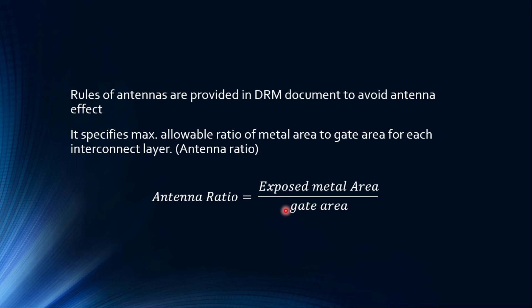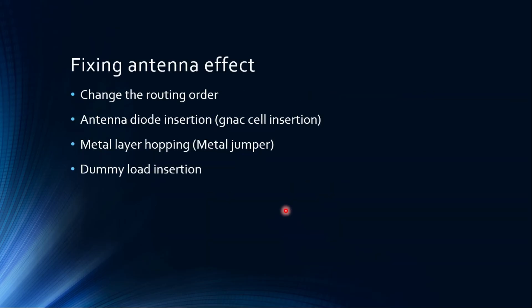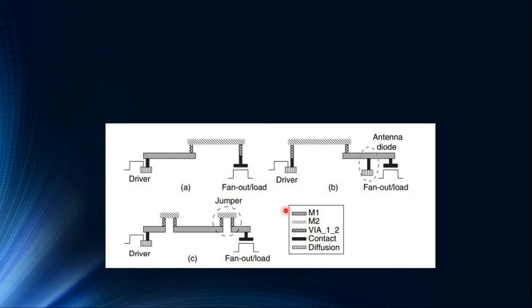So how can we fix antenna effect? There are several techniques, but I have mentioned a few very common techniques which are used in the industry today. One of them, the dummy load insertion, is not well known, but these three techniques, which are changing the routing order, antenna diode insertion or Jenac cell insertion, and metal layer hopping or metal jumper usage, are highly used. Here I have shown all the three possible cases. I haven't shown the dummy load insertion. I'll explain the antenna diode, and later it will be similar to antenna diode anyway.